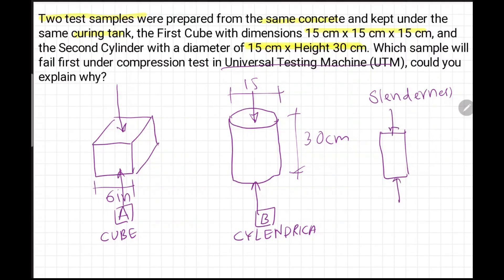So cylinder being slender, it will fail first in a compression test machine. Concrete cube will fail later. That's why there is a correlation - if my cube strength is 40 megapascals, the cylindrical strength is 80 percent, approximately 32 megapascals. In American standard we write cylindrical strength as fc prime, and Eurocode, Indian code we use cube strength and we write fck, characteristic cube strength.